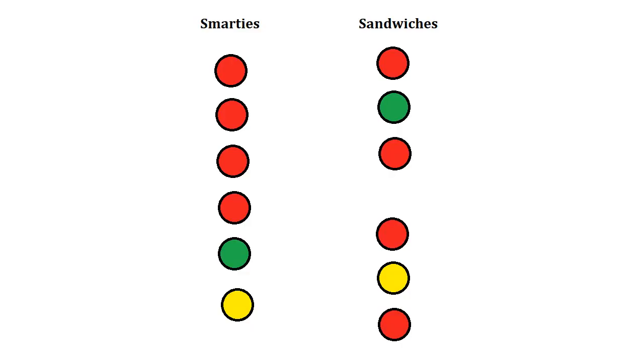Assume we are given a bunch of smarties with a variety of colors. Let's define a sandwich as one smartie placed between two others, where the top and bottom pieces have the same color and the middle piece has a different color. What is the largest amount of sandwiches we can create using them?